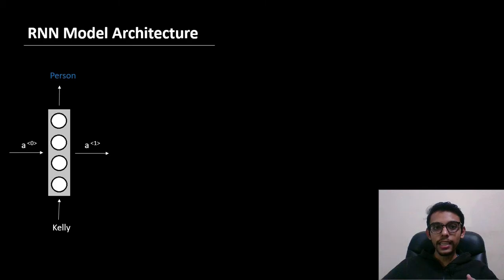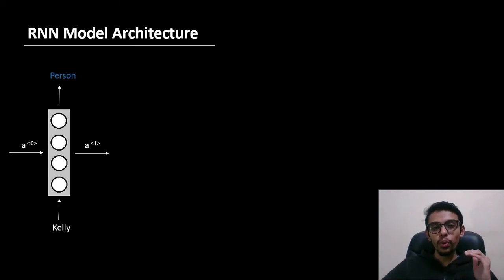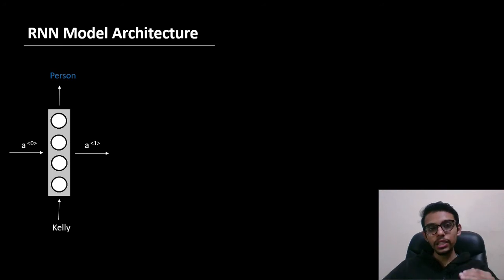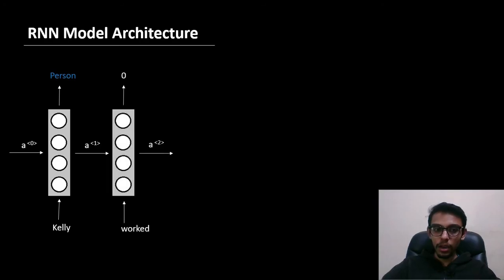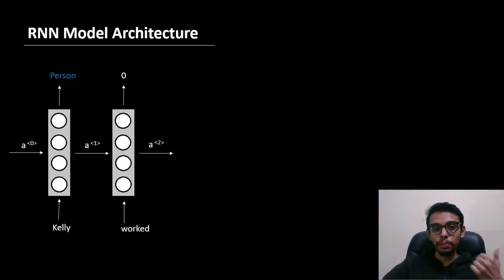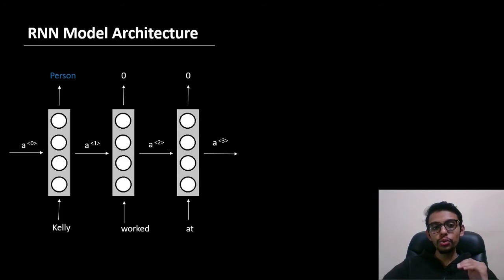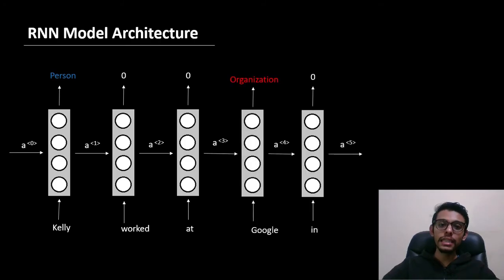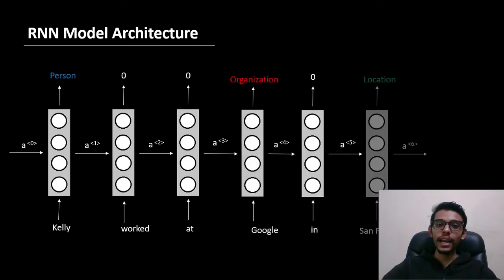We saw that the model architecture looks something like this, where we pass one word at a time and it produces one output as well as an activation. This activation is fed to the same network in the next timestamp. For example, when we pass the second word, we feed the activation from the previous timestamp, and we continue repeating this process until we reach the end of the sentence.